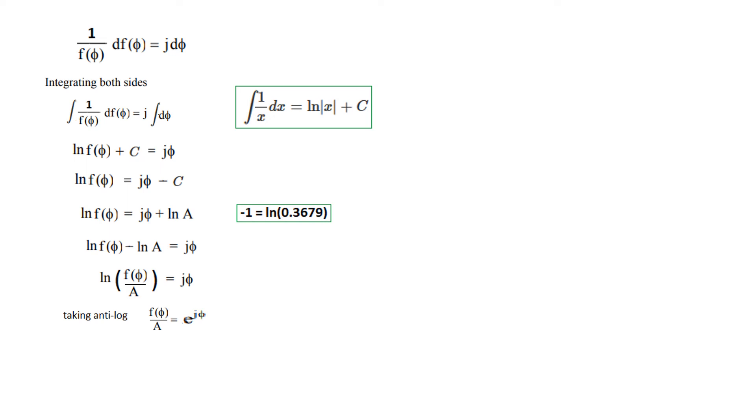And now we will take the anti-log. So taking anti-log, this will be equal to f(φ)/A and this will become e raised to the power jφ. We are taking anti-log of natural log.